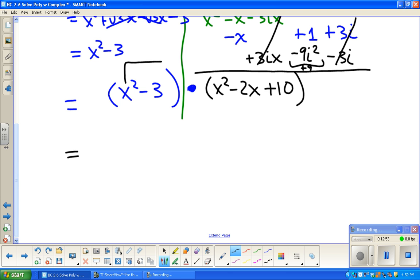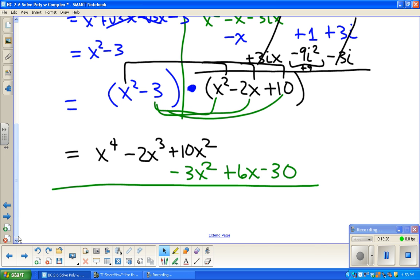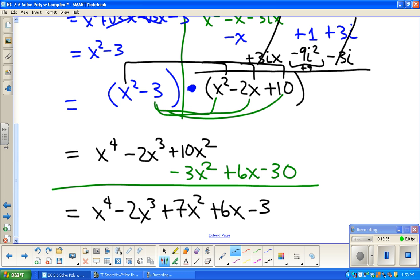Again, this x squared has to multiply all three of these. So x squared times x squared. x squared times 2x. x squared times 10. And then I'm going to do negative 3 times all three of these. Negative 3 times x squared. Negative 3 times 2x. And negative 3 times 10. So we'll just do some adding here. x to the 4th minus 2x to the 3rd. 7x squared. 6x minus 30.